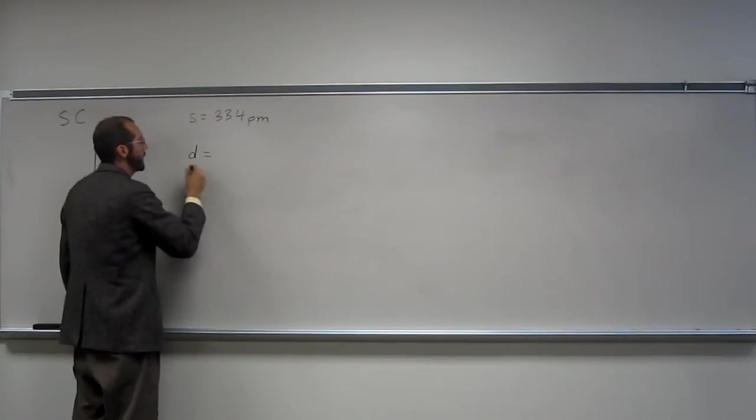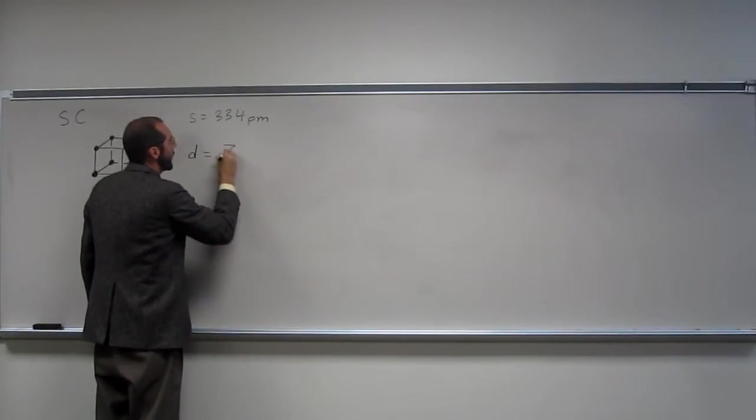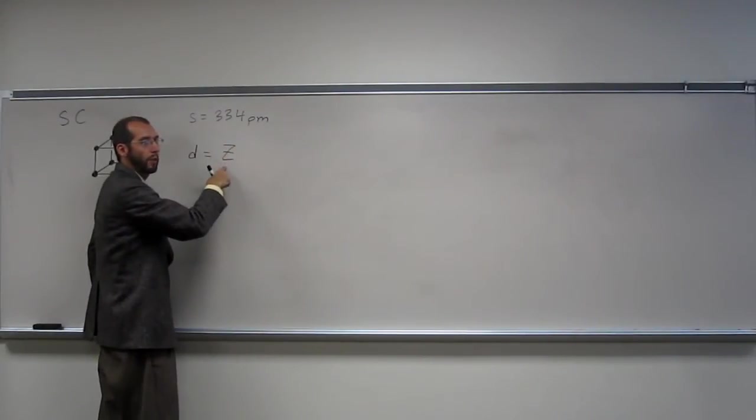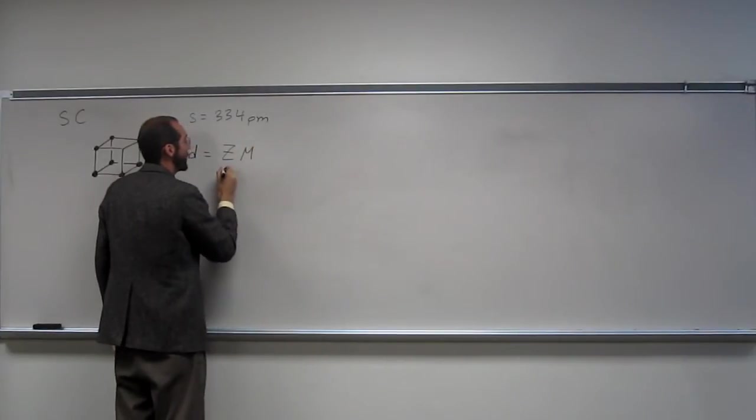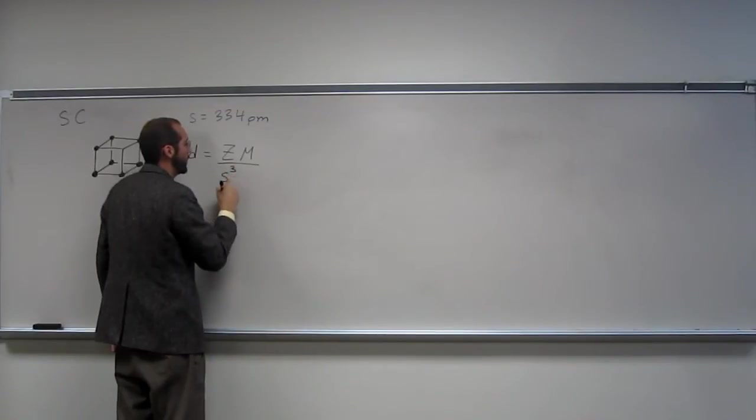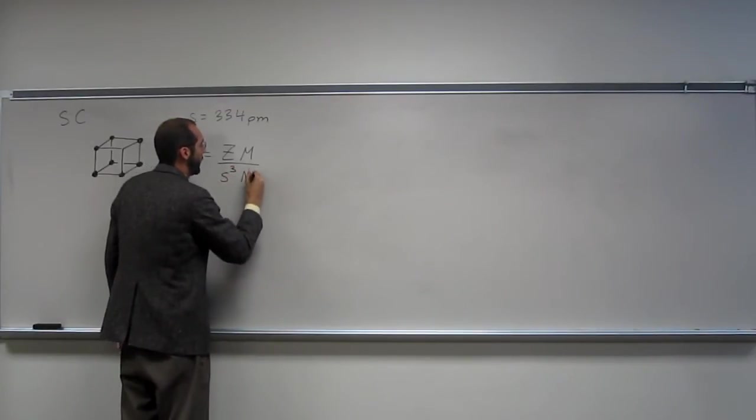D density equals Z, which is the number of lattice points per unit cell, times the molar mass of the metal, divided by the side cubed, times Avogadro's number.